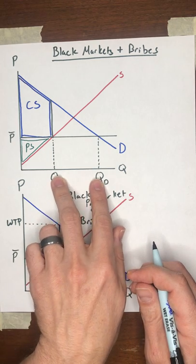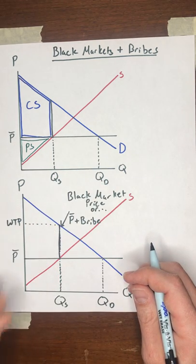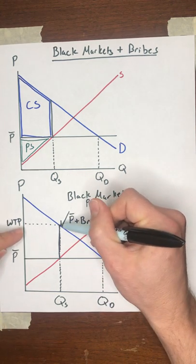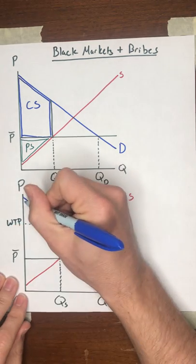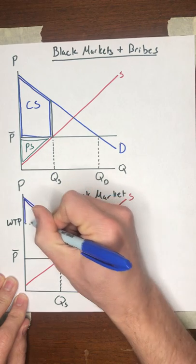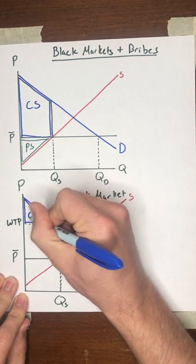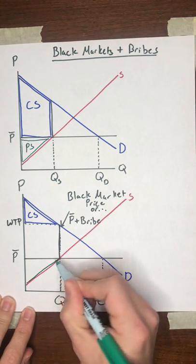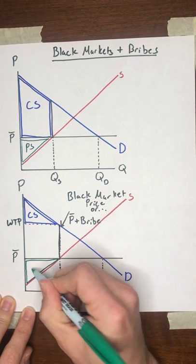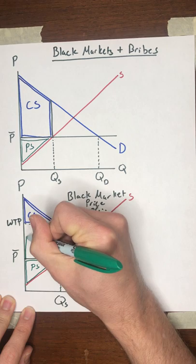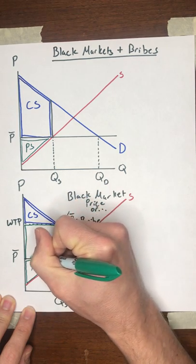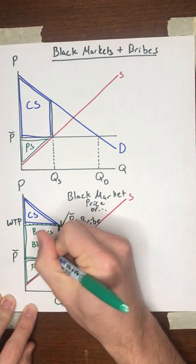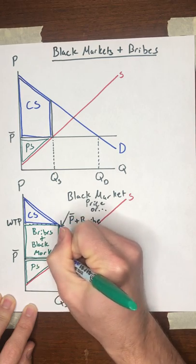So this competition among buyers can result in black markets and bribes. And what would happen then? Well, now the price that the buyers are paying isn't down here at P-bar, it's up here at this willingness to pay. So that consumer surplus actually ends up being this smaller triangle here, and the producers capture not just what you expected them to, they also capture this whole area, this rectangle in the middle. This is all captured through bribes and black market.